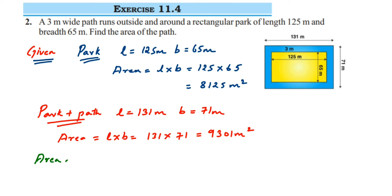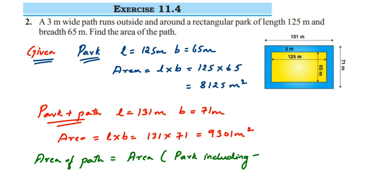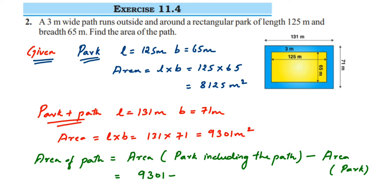So we got both the areas. Now we're going to find the area of only the path. Area of path equals area of (park including the path) minus area of the park. Substituting the values, we get 9301 minus 8125, and when you subtract these two you get 1176 meter square.